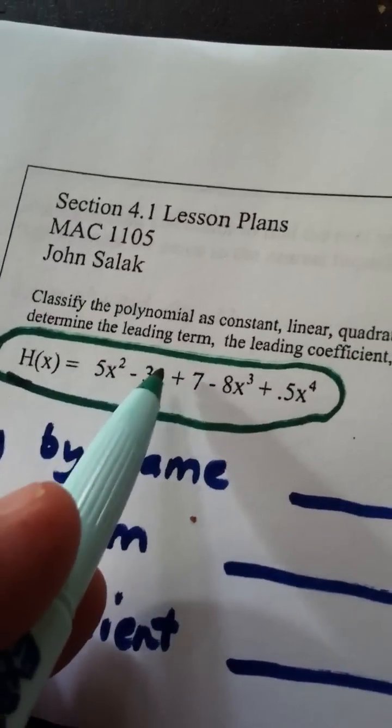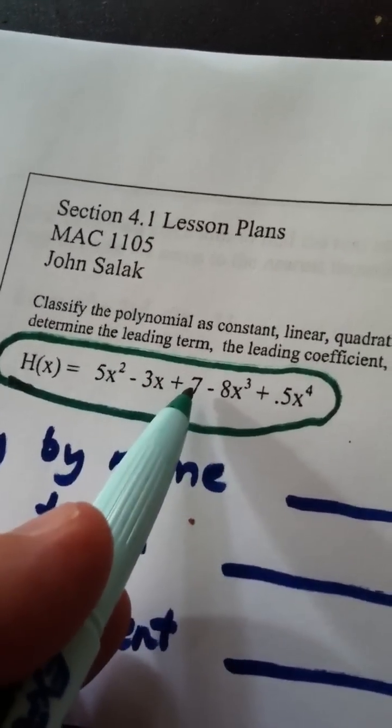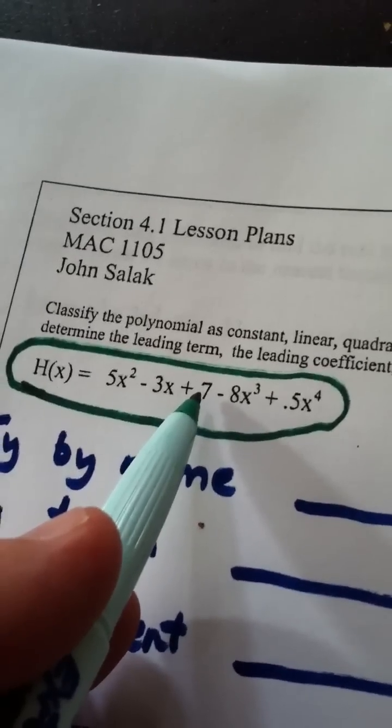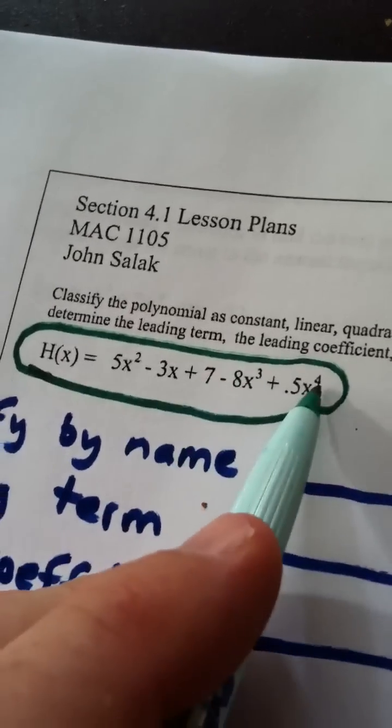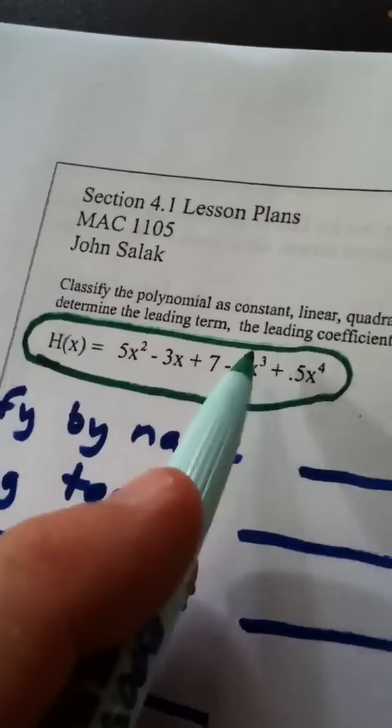This term has degree 2, this term has degree 1, this is a constant term, which means it's degree 0, by the way. This is degree 3, and this is degree 4, per term.